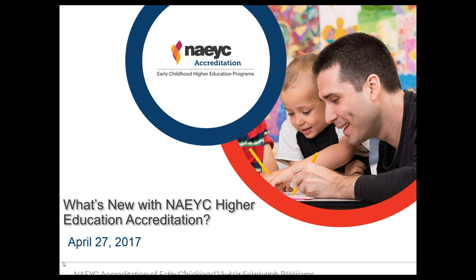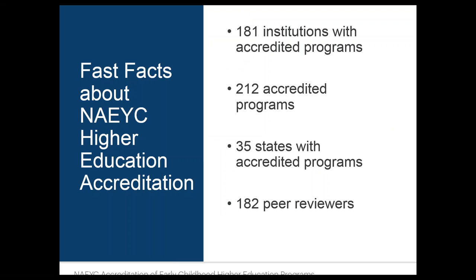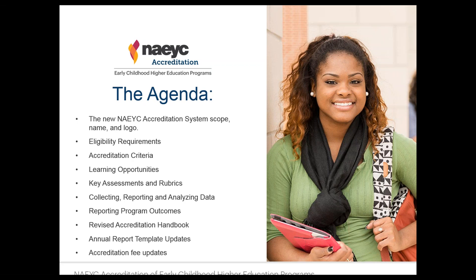Before we get started, here are a few fast facts about where we are in the accreditation system right now. We have 181 institutions with accredited programs at the associate degree level, representing 212 accredited programs. We are in 35 states and have a peer reviewer pool of 182 peer reviewers. The system is growing, with a number of programs on the docket for consideration at our next commission meeting this summer.